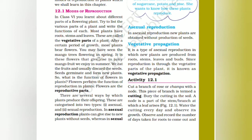You may have seen the mango trees flowering in spring. It is these flowers that give rise to the juicy mango fruit we enjoy in summer. We eat the fruits and usually discard the seeds. Then seeds germinate and form new plants. Flowers perform the function of reproduction — flowers are the reproductive parts of the plants.